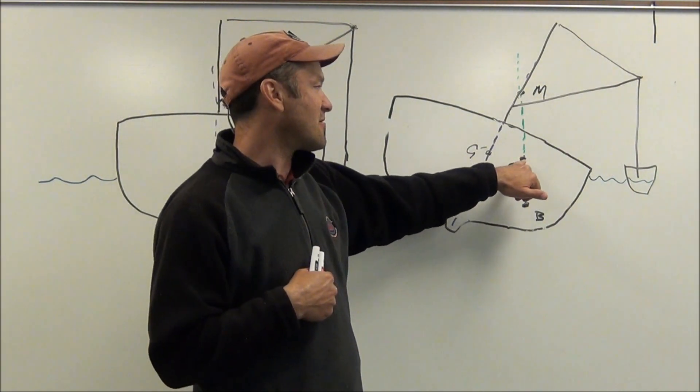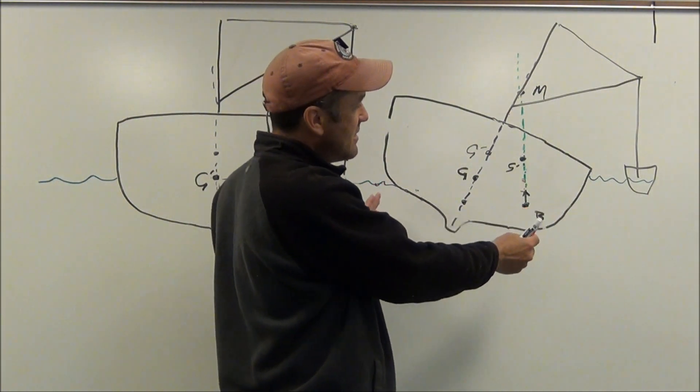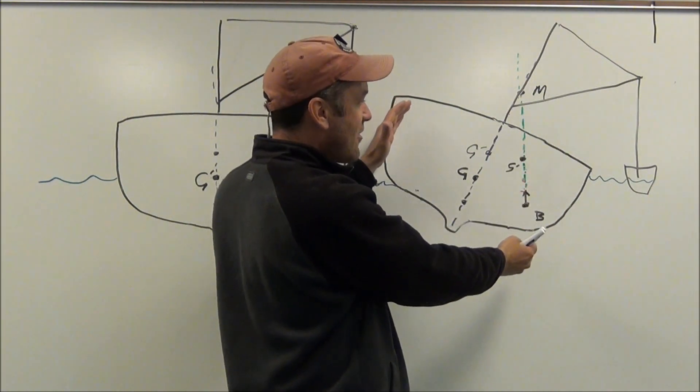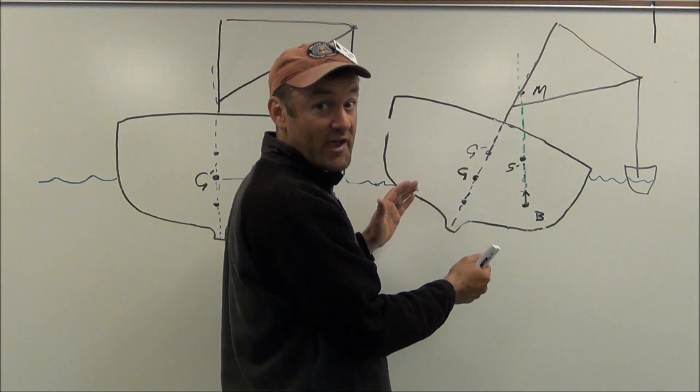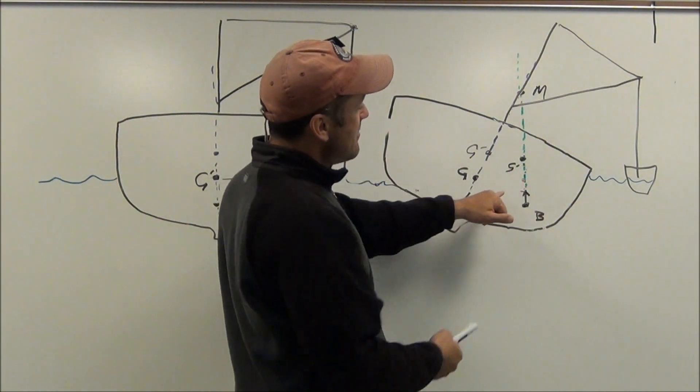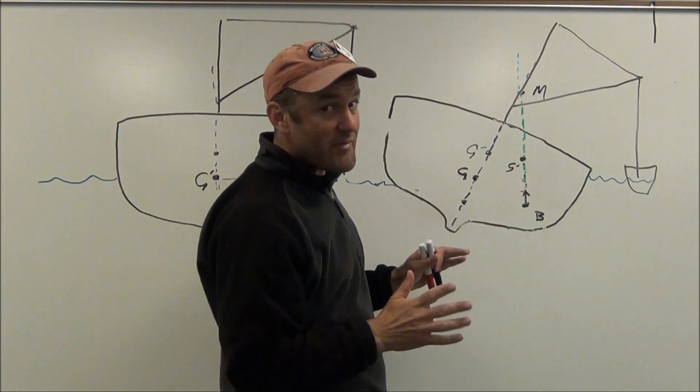Now under this circumstance where there's no righting arm, the vessel's sitting at equilibrium. So it's listing over, which is a leaning of the vessel caused by a change in the location of the weight. It's listing, but it's at equilibrium. As long as it stays here, it's not going to tip anymore. That can be okay.